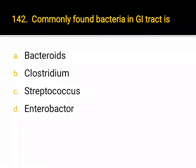Commonly found bacteria in GI tract is: A. Bacteroides, B. Clostridium, C. Streptococcus, D. Enterobacter. Correct answer: A. Bacteroides.